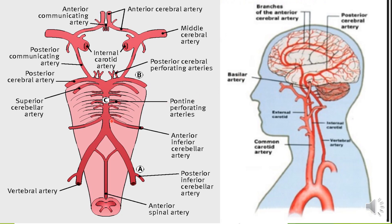The first branch of the basilar artery is the anterior inferior cerebellar artery on both sides. It continues and gives several smaller branches called pontine perforating arteries. It also gives another important branch called the superior cerebellar artery.